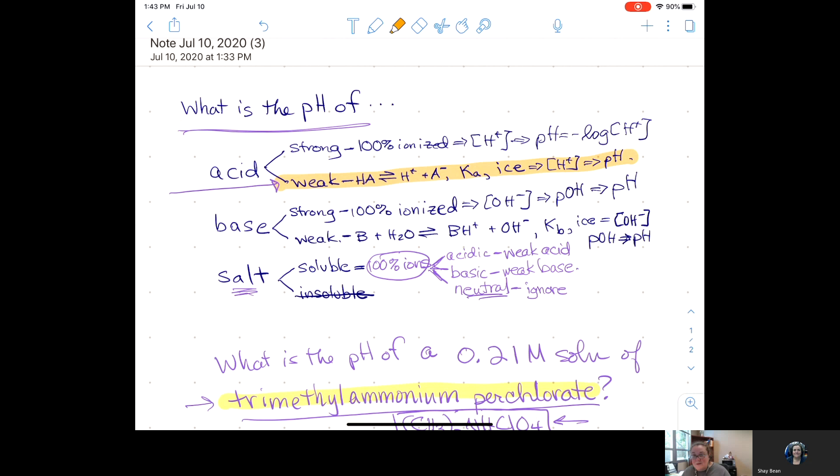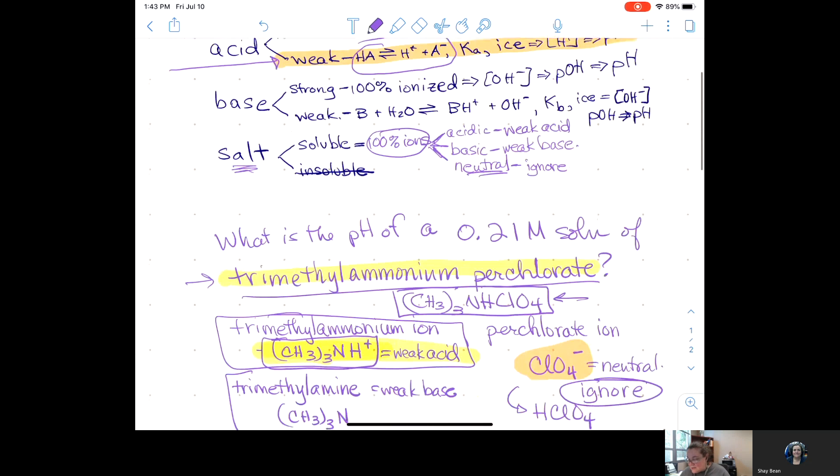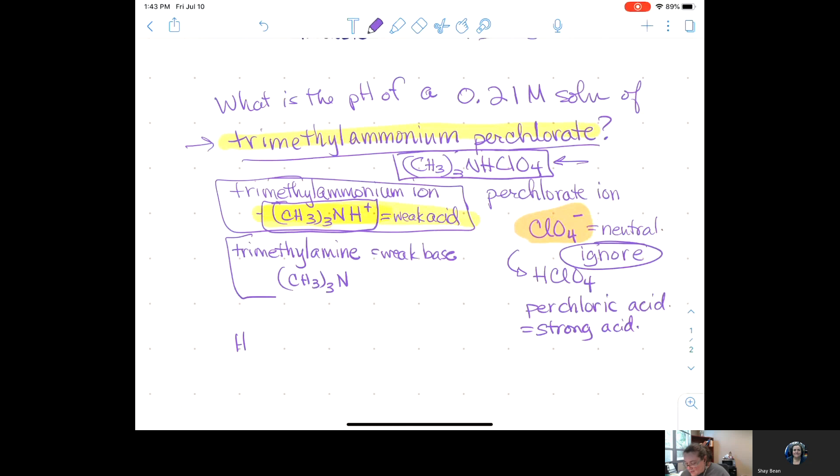So, we have to set up the equilibrium reaction. At this point, you can use the generic equilibrium reaction. You do not have to write it with all the formulas. You should be able to recognize it with all the formulas. I think there was one on the quiz where you had to recognize which was the right equilibrium reaction. But when your question is, what is the pH of? Don't slow yourself down. Don't make it harder than it is. I'm just going to use that generic HA equilibrium with H plus and A minus.